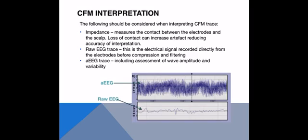We also need to consider the raw EEG trace — shown at the very bottom of the picture — which is a direct real-time recording before compression and filtering gives us our AEEG or CFM trace. Then we consider the AEEG, which is the amplitude-integrated EEG: the raw EEG that's been compressed and filtered. Here we want to look at the wave amplitude — the span of the wave — and look for variability.